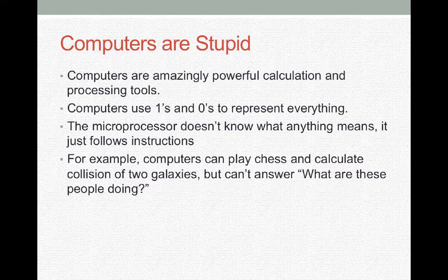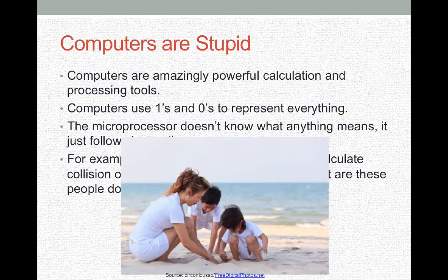We like to say that computers are stupid. They are amazingly powerful at calculation and processing, but they are stupid in the sense that they only speak binary — the ones and zeros used to represent everything. A microprocessor within a computer doesn't know what anything means; all it does is follow instructions. For example, computers can play chess better than the best master in the world and can calculate what happens when two galaxies collide, but can't answer the question 'What are these people doing?' — which to you is probably pretty easy to answer just by looking at it.